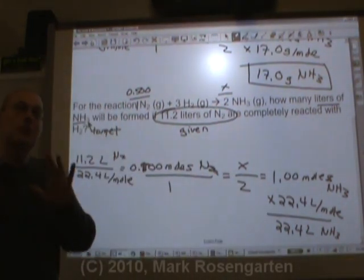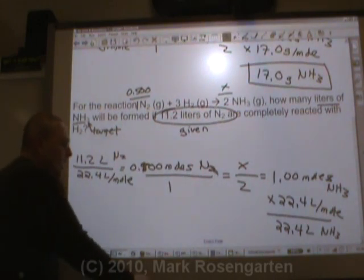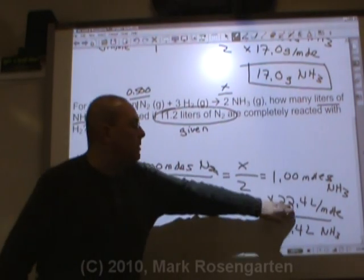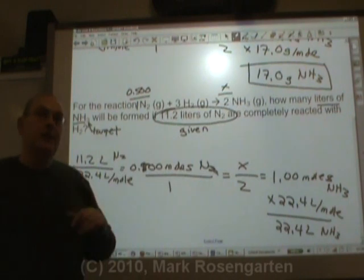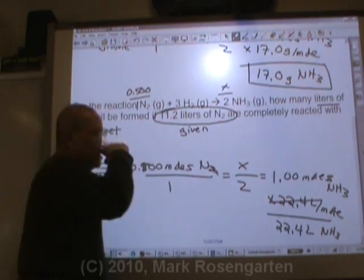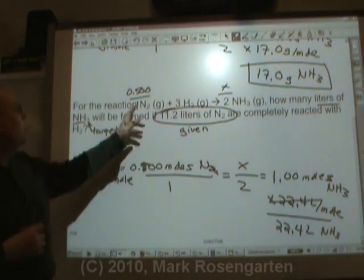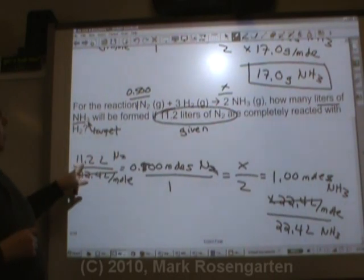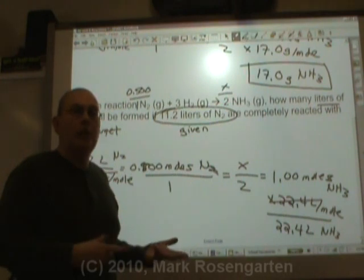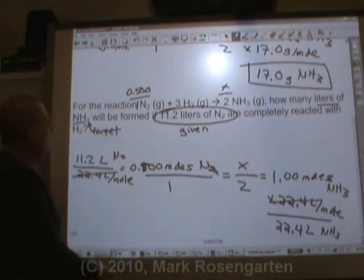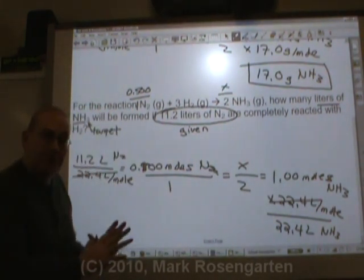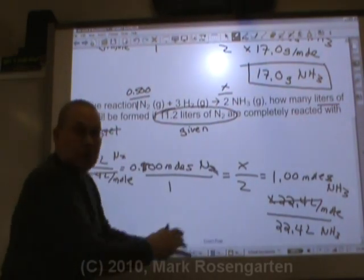Here is the really cool part: in the first step we divided by 22.4, and at the end we multiplied by 22.4. You don't even need to do those steps — you can just set it up as a ratio. Notice it's a 1 to 2 ratio, and our answer is also a 1 to 2 ratio. So if you've got liter-to-liter problems, you can treat them like a mole-to-mole problem, because dividing and then multiplying by 22.4 cancel out. If you're not comfortable with that shortcut, then by all means do it the full way.